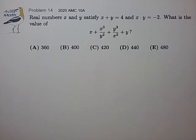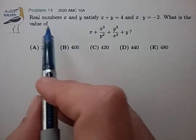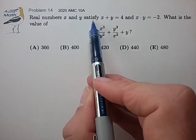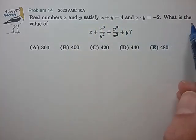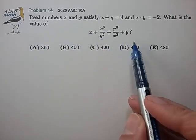Hi, this is problem 14 from the 2020 AMC 10A. Real numbers x and y satisfy x plus y is 4, x times y is minus 2. What is the value of this expression?